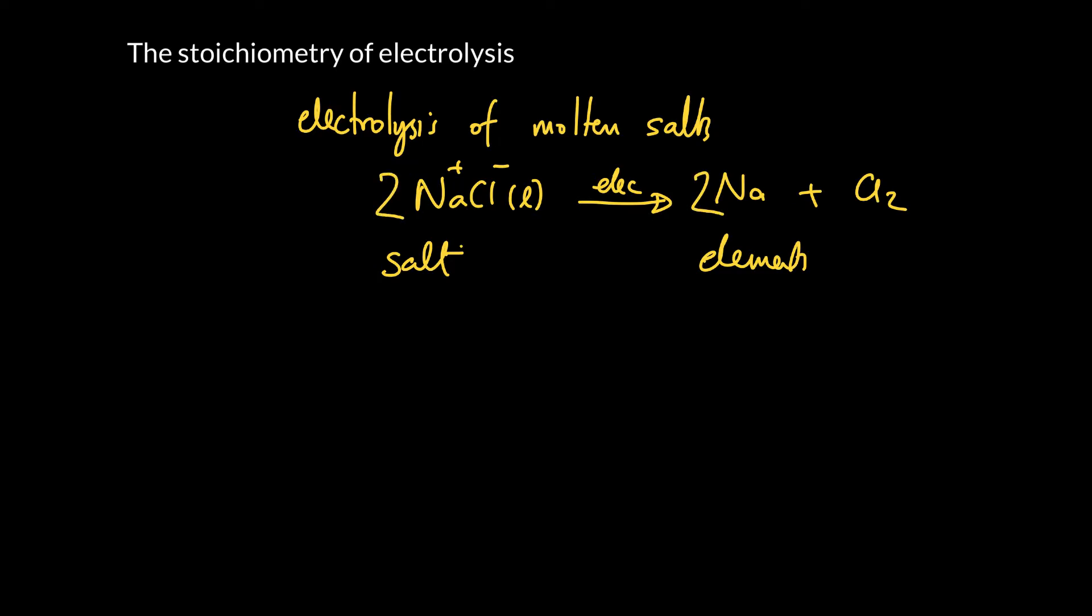Imagine we had something like alumina. Actually this uses up an incredible amount of electricity around the world. The production of aluminum comes from alumina. In fact, it wasn't too terribly long ago we didn't really know how to do this. We can drive it and form aluminum and oxygen. And we can balance this by putting a 2 here, a 4 here, and a 3 here.